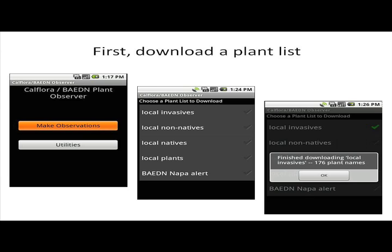The first thing you do when you get your phone is download a plant list. This is one of two times that you need a phone connection. The phone communicates with CalFlora and downloads a plant list. There are dynamic plant lists generated by the phone based on where you're located — CalFlora asks the phone for your geographic coordinates, looks at the database, sees what plants are known to grow in the area, and puts that list on your phone. There are also static lists, like Napa County's Baden Alert Plant list. The static list I use is all California plants — 10,000 plus taxa. After that, you're done with the phone connection and can just go out in the field and start mapping plants.